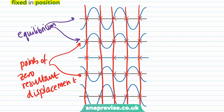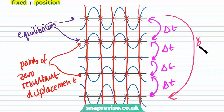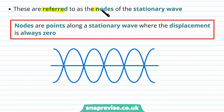Over fixed time intervals delta t, the points of zero resultant displacement stay at zero. For example, over these time intervals we've had half an oscillation — a point begins at maximum displacement and after delta t is at maximum negative displacement. A full oscillation is when that point returns to maximum positive displacement. These are referred to as the nodes of the stationary wave: nodes are points along a stationary wave where the displacement is always zero.